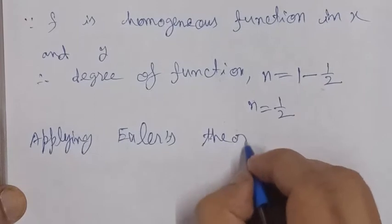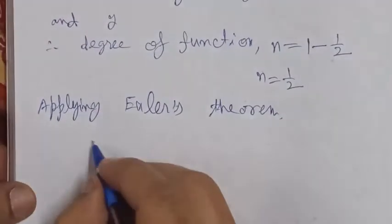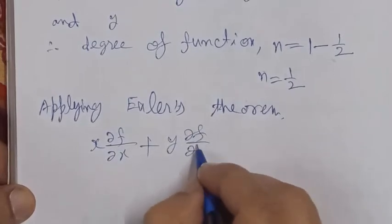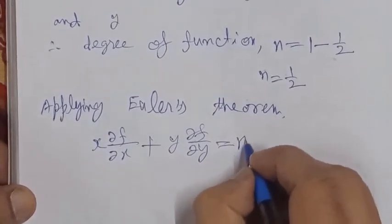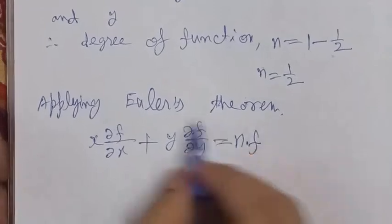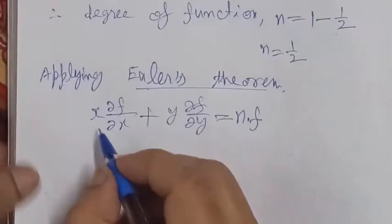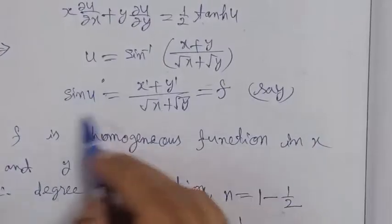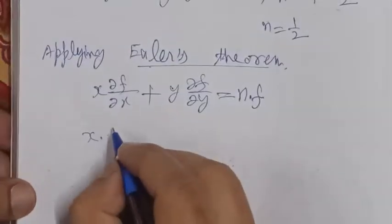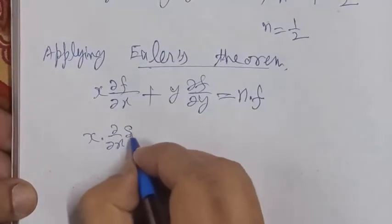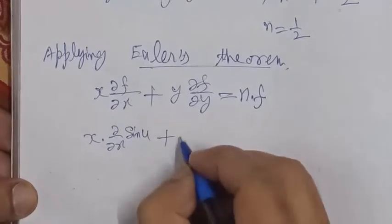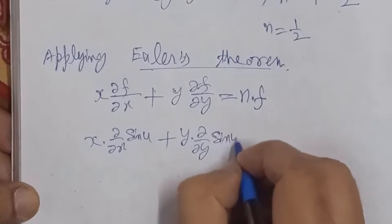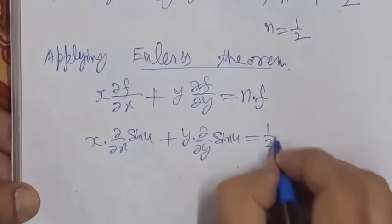Applying Euler's theorem, we know that x del f over del x plus y del f over del y equals n times f. We need to find del u over del x and del u over del y, putting the value n equals 1 by 2 and f equals sin u.